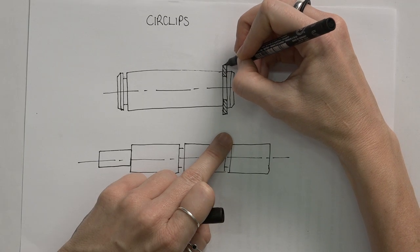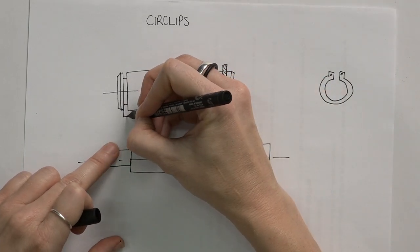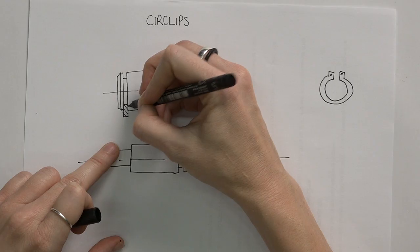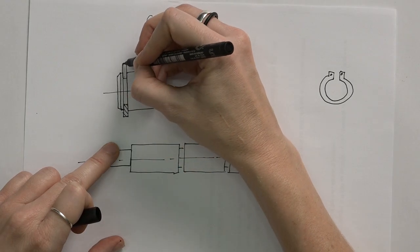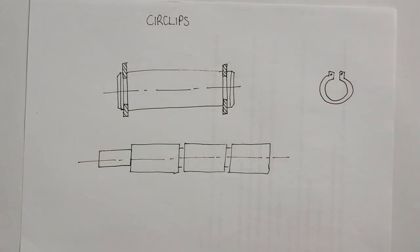And a circlip we actually section, unlike the other standard components. So if we add circlips on either side, that's how that would look.